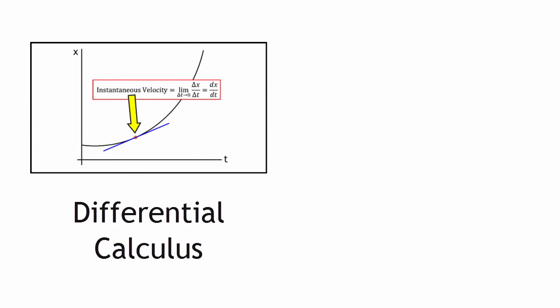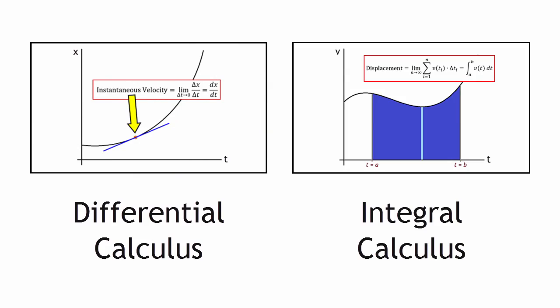We credit Leibniz for most of the notations that we use in calculus today and for coining the term calculus, and we credit Sir Isaac Newton for taking calculus and putting it into actual applications, mainly in physics. And there are two main branches of calculus: differential calculus and integral calculus.